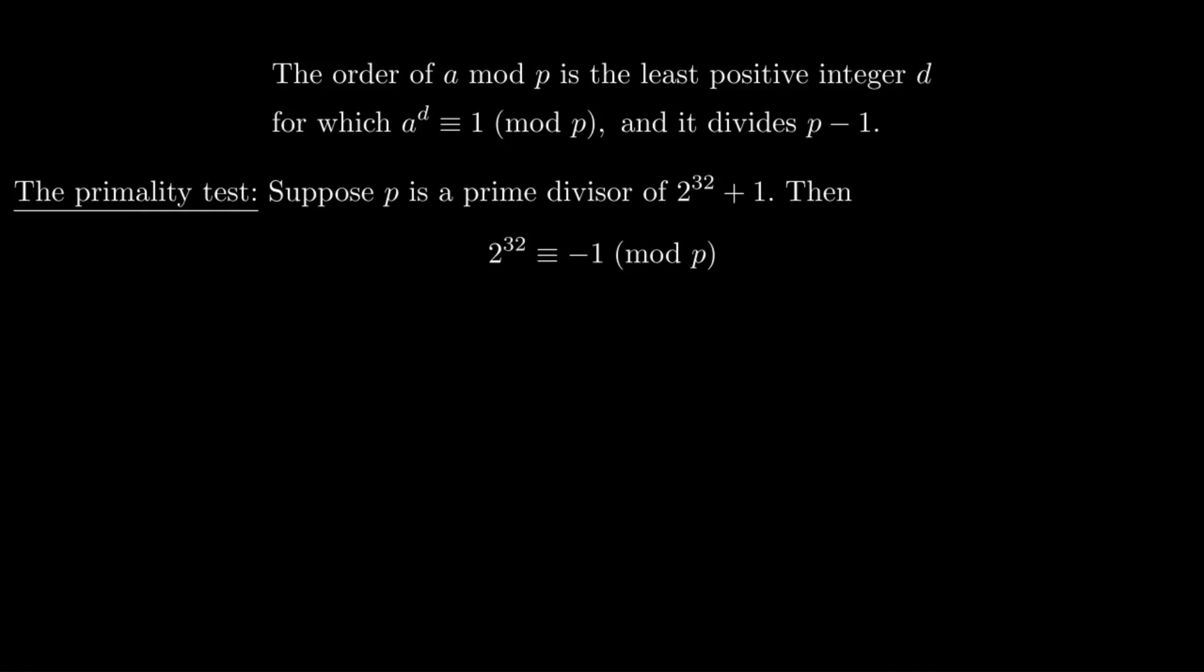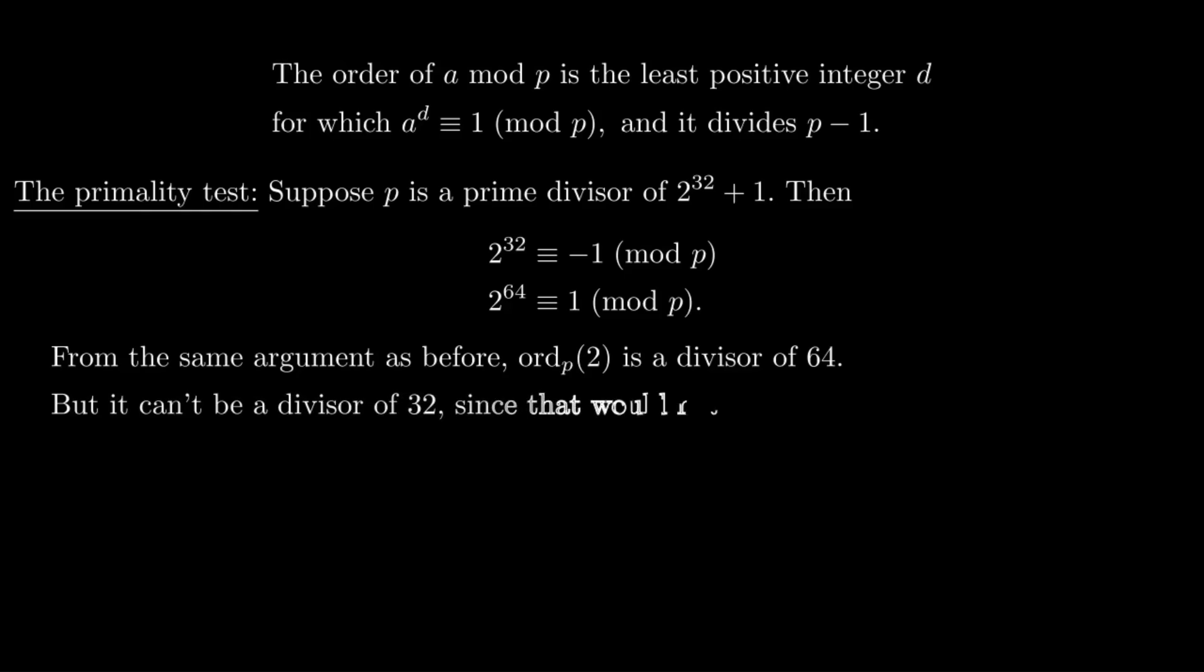So it means that the length of the cycle, the order, has to go evenly into 64. So the order divides 64. But the order cannot be a divisor of 32 because that would force 2^32 to be 1 mod p. But it isn't. It's -1. So it takes exactly 64 steps to get back to 1.